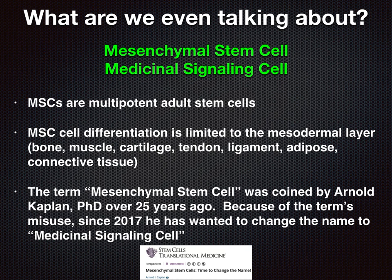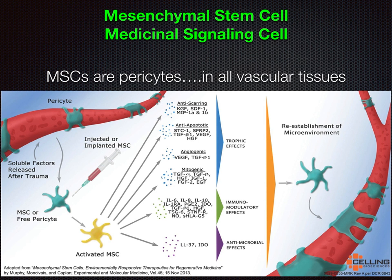MSCs are pericytes. They are located in all vascular tissues. Upon activation, or injection, or implantation in a specific location, they can activate and release many different trophic factors, immunomodulatory factors, and antimicrobial factors.